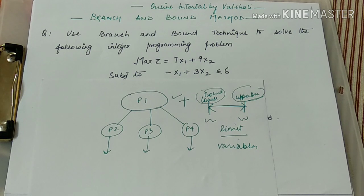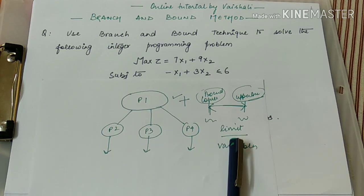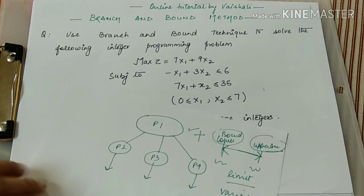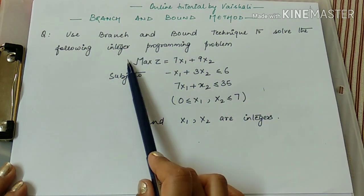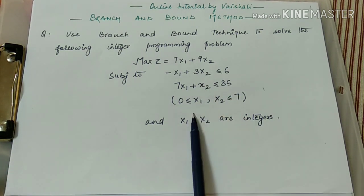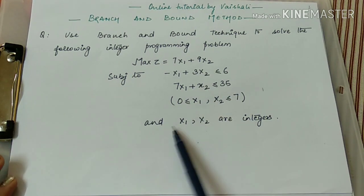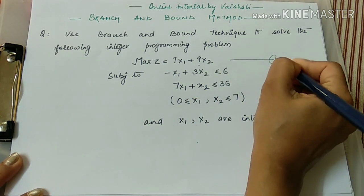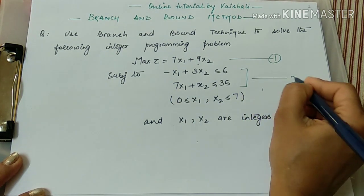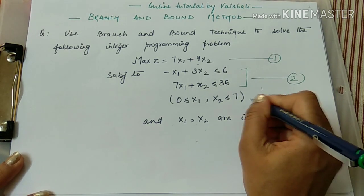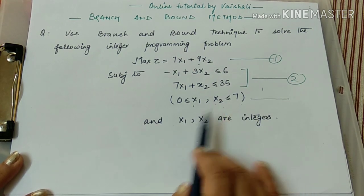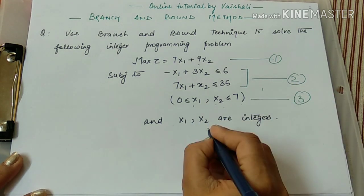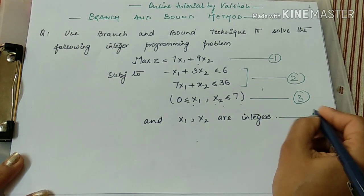Combining these two terms — branch and bound — we have to utilize this concept to solve the LPP problem. Now moving to the question: use branch and bound technique to solve the following integer programming problem. The LPP is given to us with an objective function (termed as 1), two constraints (termed as 2), variable limits x1 greater than 0 and x2 less than 7 (termed as 3), and the restriction that x1 and x2 are integer type variables (termed as 4).